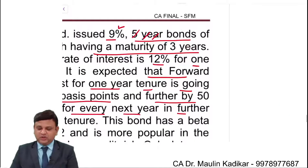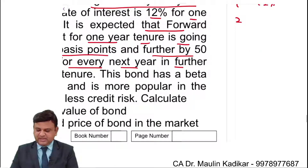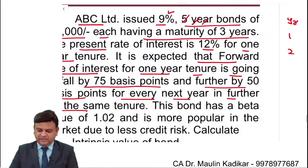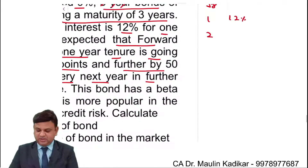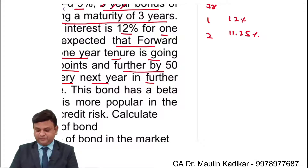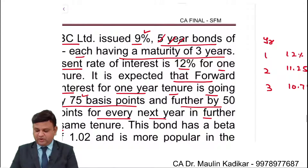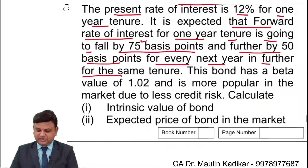In short, the first year rate is 12%, for the second year it will fall by 75 basis points to 11.25%, and for the third year it will fall further to 10.75%.